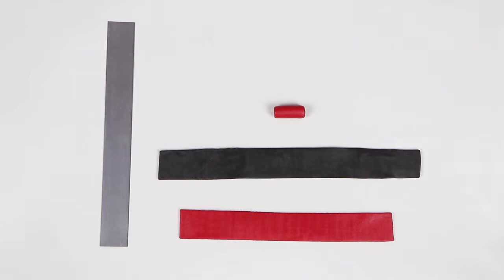These are the supplies you will need. I have pre-flattened my red and black clay using the thickest setting on my pasta machine, and I have pre-trimmed my clay into rectangular shapes.